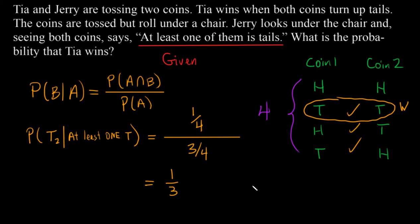Now, is that better than her original chances? The answer is yes. If we just play this game and we flip two coins and we want to know if Tia wins, she only has a one in four chance of winning. So normally she has a 25% chance of winning.